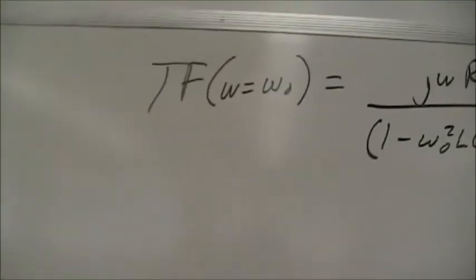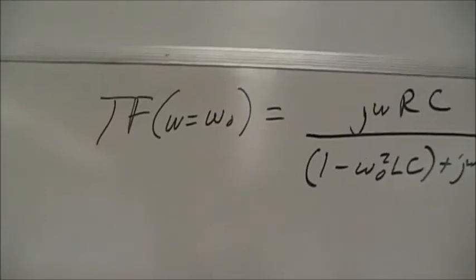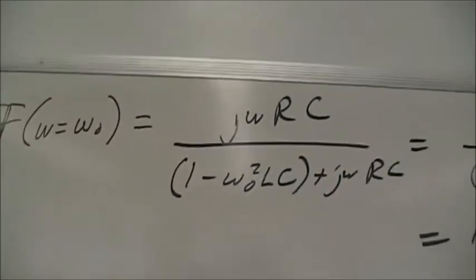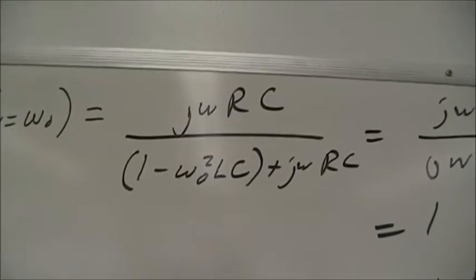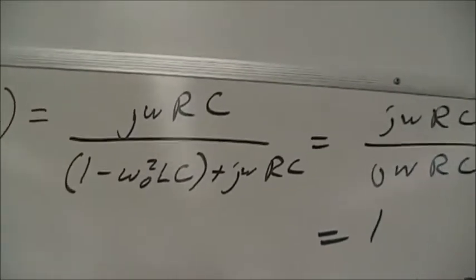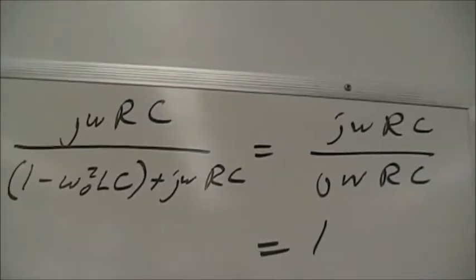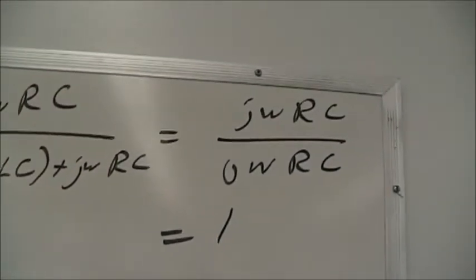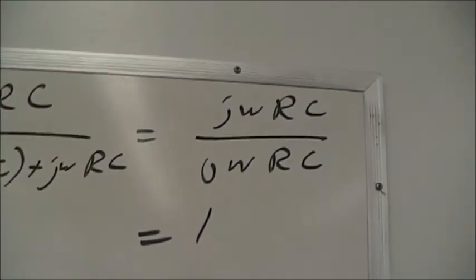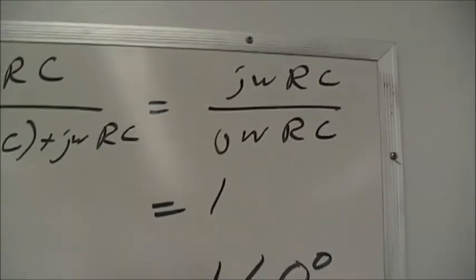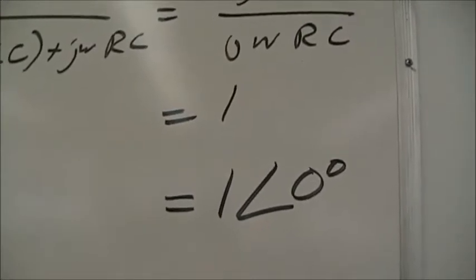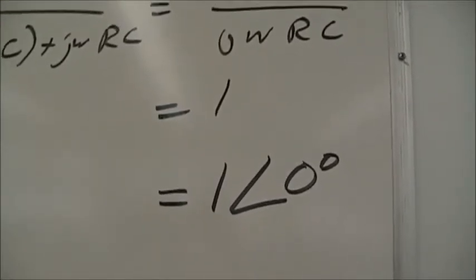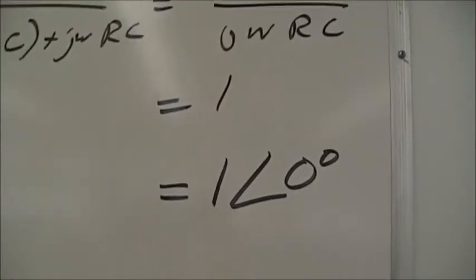Now, in the lab measurement, we will see that the transfer function at ω equals ω₀ is then jωRC over 1 plus ω²LC plus jωRC. Because the real term in the denominator goes away, we end up with jωRC over jωRC, which is of course 1, and really 1 at 0 degrees. So in the lab measurement, we should see the input and output the same and in phase.